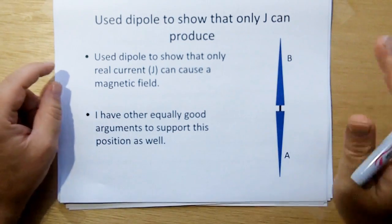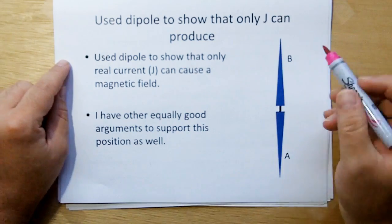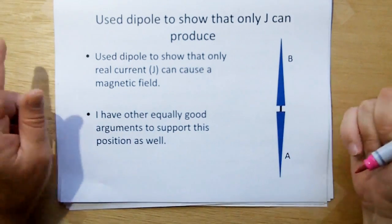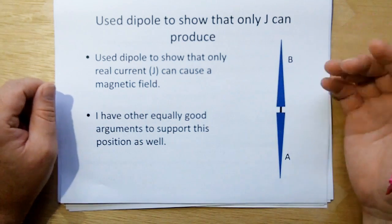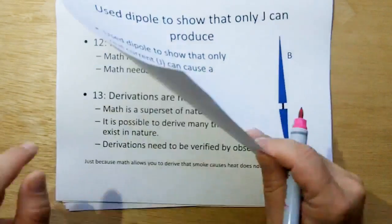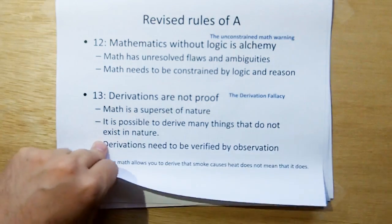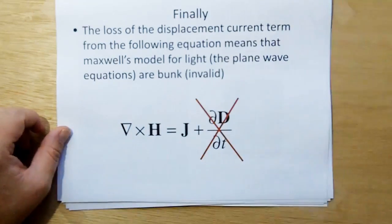So next in the video I showed a dipole example to show you that only J can be the cause of the electric field, the real current, not the changing flux lines. Only the real current can cause the magnetic field.